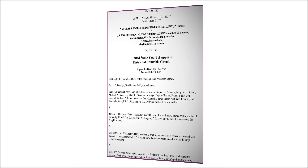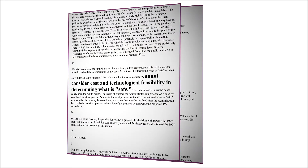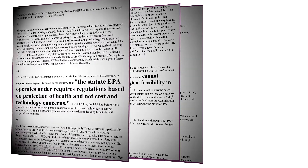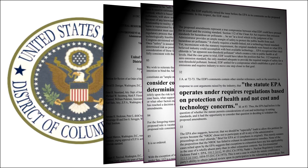EPA set the standard for vinyl chloride as best they could under the circumstances. But the Natural Resources Defense Council did not agree and sued the agency, saying that EPA set the standards based on issues of technology and cost rather than on health concerns, and that the Act does not allow for that. Instead, the Natural Resources Defense Council said EPA was required to base the regulation on human health, and the agency failed to do that. The parties ended up in court, and the Council won.